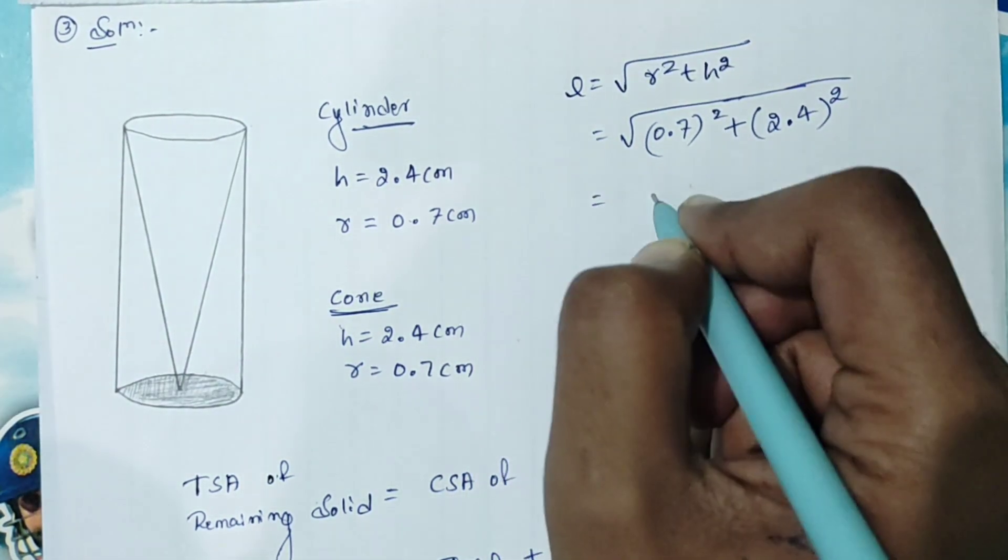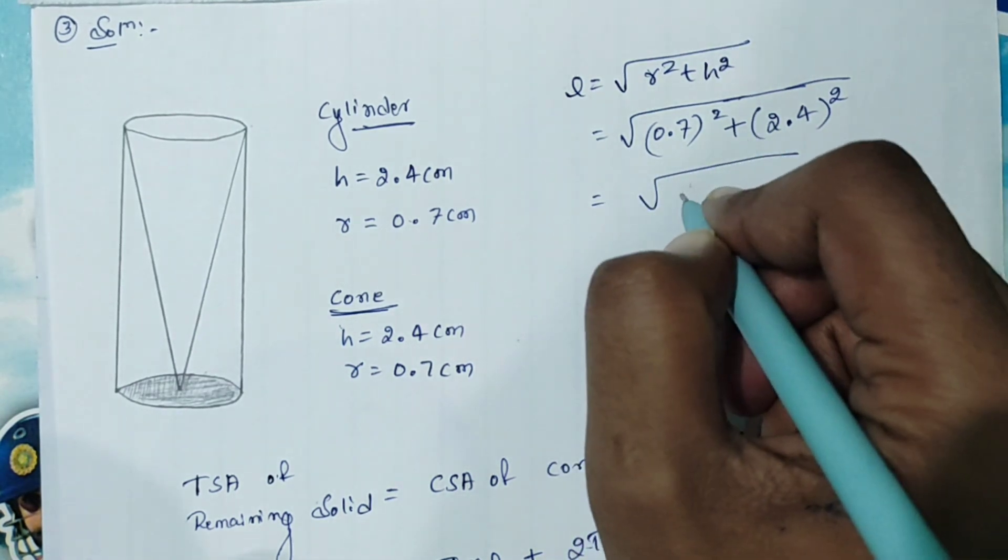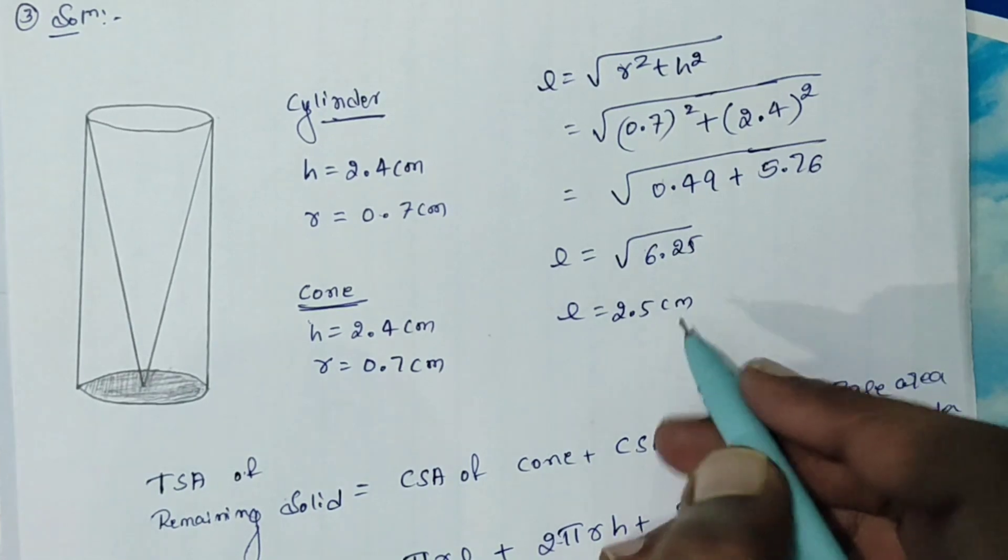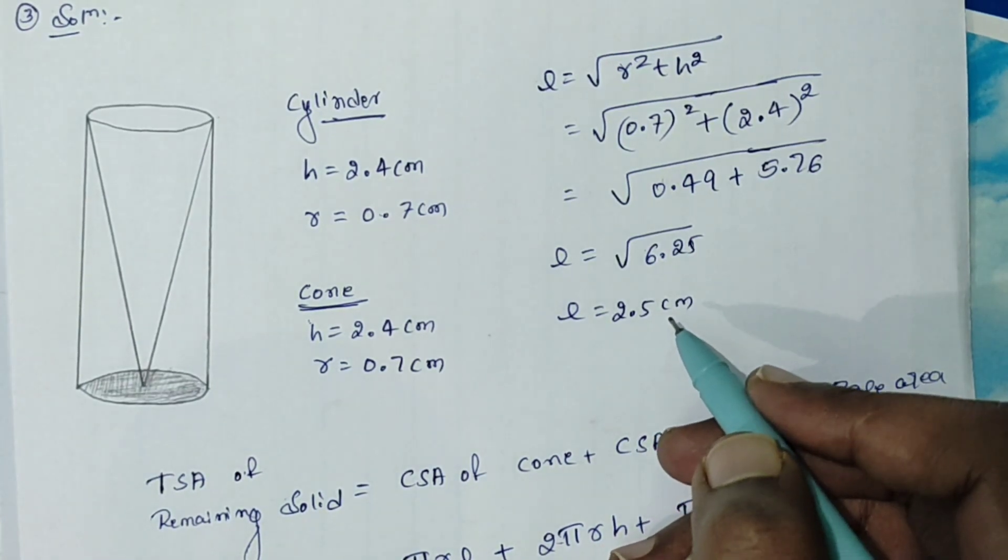After the simplification, we are going to get this is 0.49 and the slant height is equal to 2.5 centimeter.